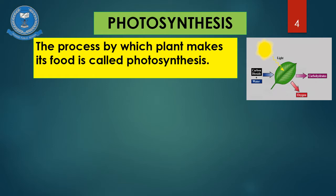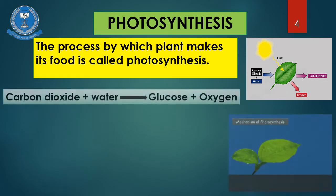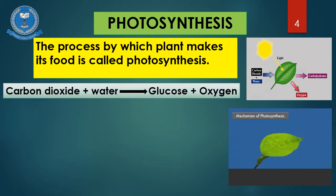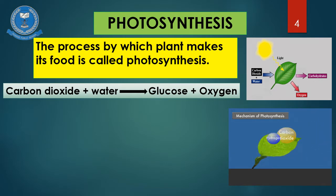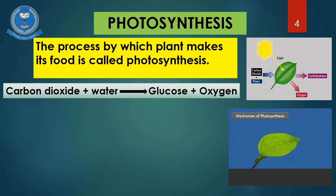Through photosynthesis, plants are able to prepare their own food. Carbon dioxide plus water, using light energy from the sun and chlorophyll which is present inside the leaves, glucose will be formed and oxygen gas will be released. Keep in mind students, carbon dioxide and water are the two raw materials for photosynthesis, while oxygen gas which is produced during photosynthesis is a waste gas.